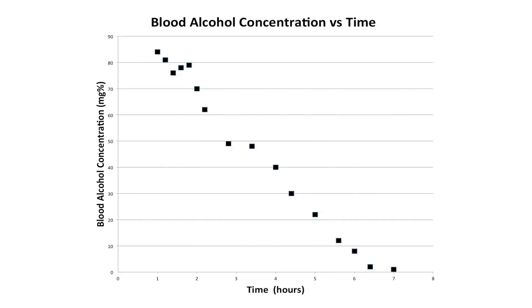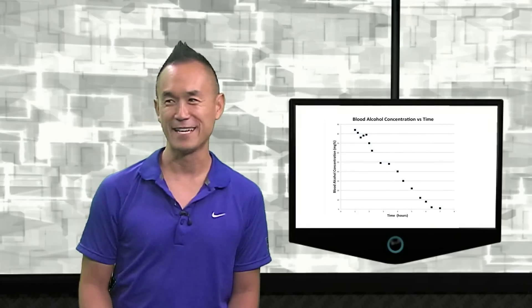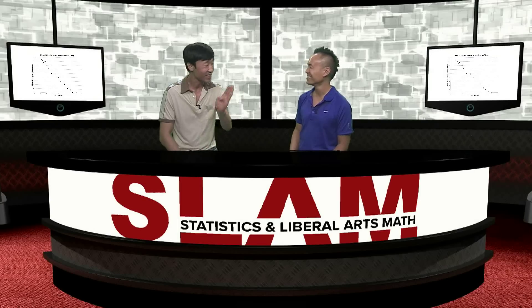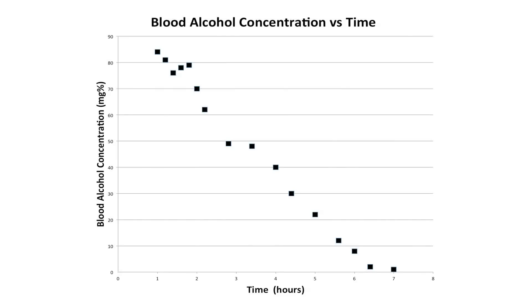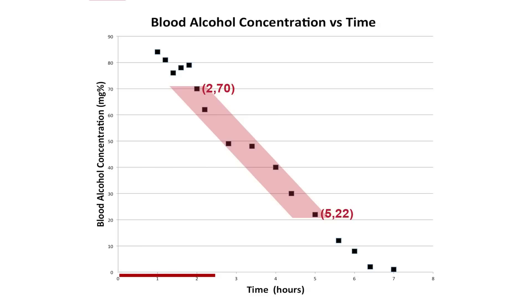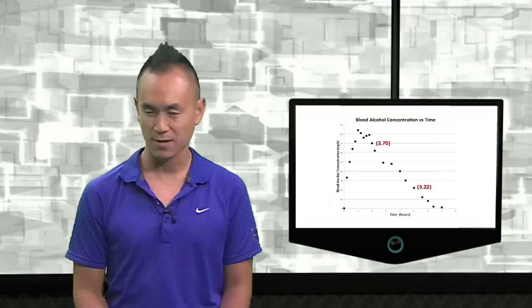So let's take a look at this chart. Why don't we pick a couple of points? Which points do you think would be good to pick? We're not going to just pick random points — we want to pick points that fit all the other points pretty well. If you look at the graph, maybe (2, 70) and (5, 22). That seems like it's right in the middle of all the points. So if you drew a line through those two, you could have a line that sort of fits that data. So (2, 70) means after two hours his level was 70%, and then after five hours his percentage was 22%.